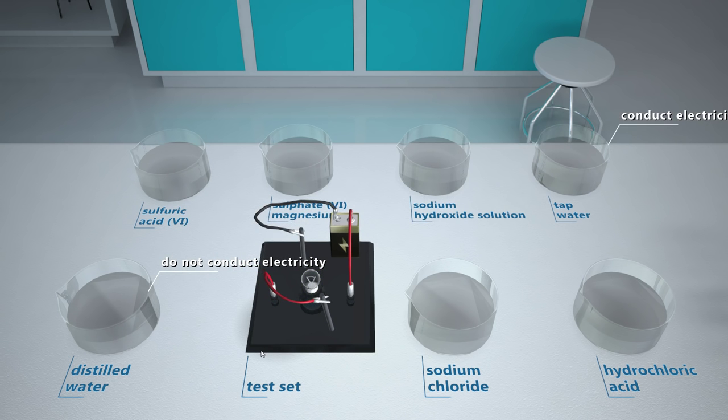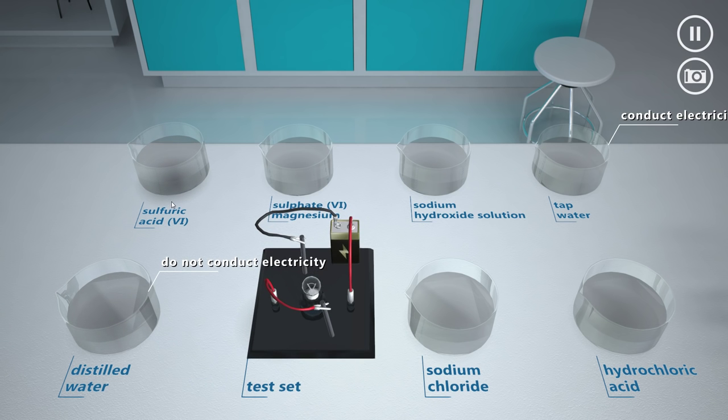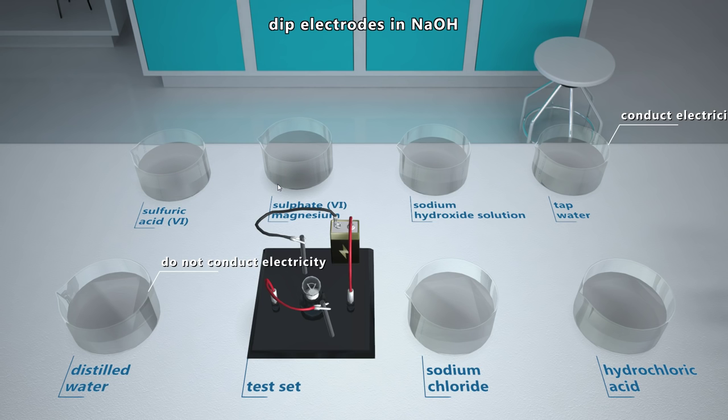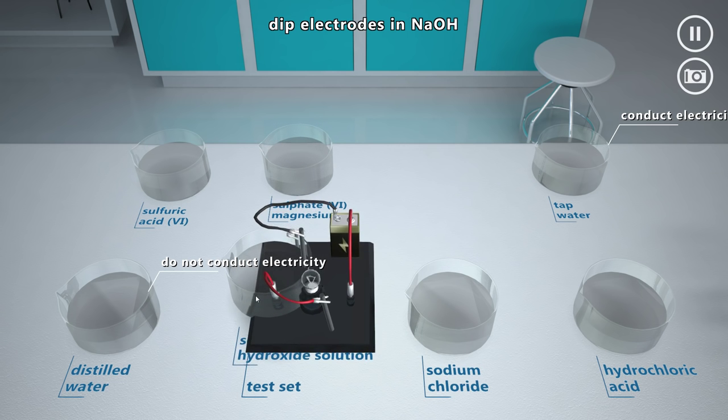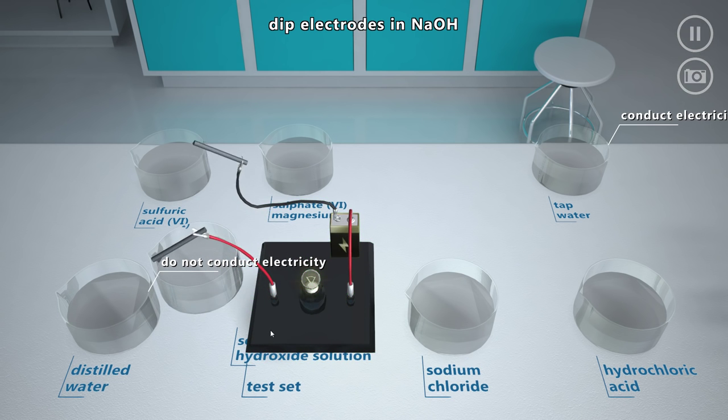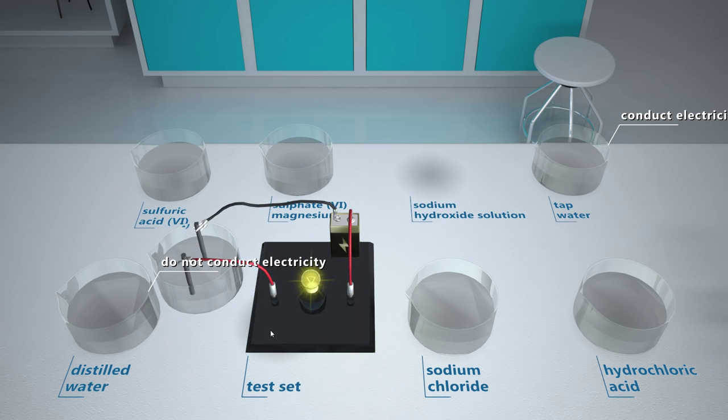Now it is time for alkaline solutions. Let's start with sodium hydroxide solution. A sodium hydroxide solution conducts electricity. Substances which exhibit such properties are called electrolytes.